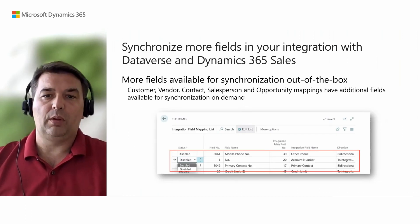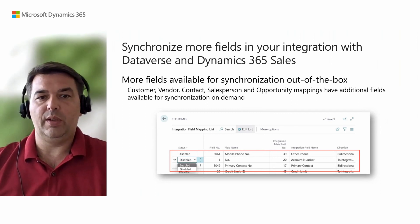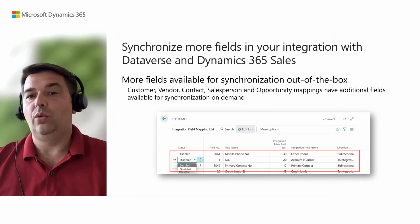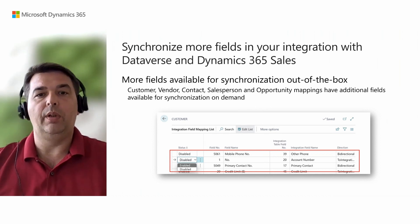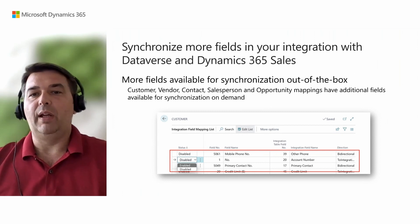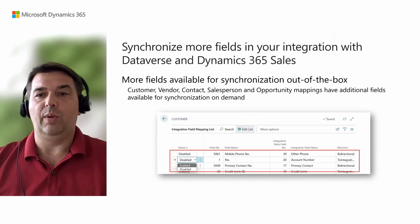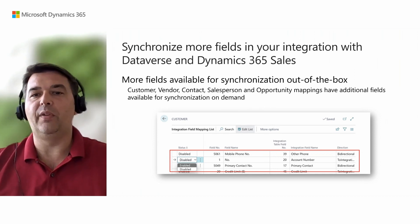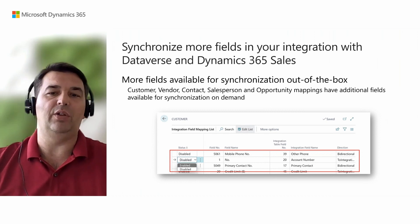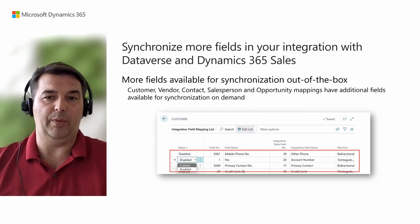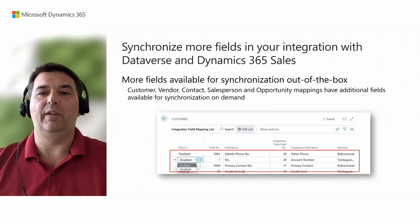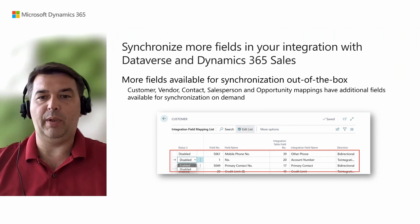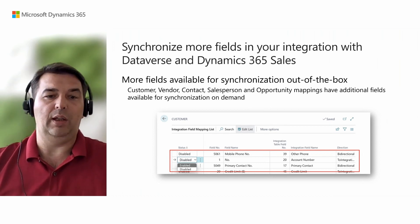Companies often customize their integration between Business Central and Dataverse to fit specific business needs. To make this easier without the help of a developer, more fields are now available for mapping in standard integration table mappings. Customer, vendor, contact, salesperson, and opportunity integration field mappings now have additional fields available. These additional fields are disabled by default, but to use them you simply open the integration field mapping page, choose the direction, and enable them.